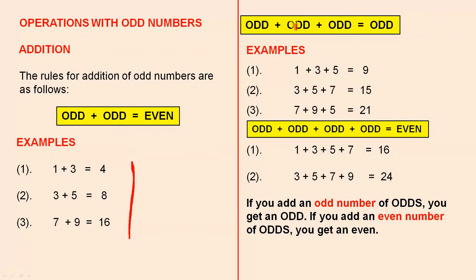If you add three odd numbers together, you get an odd number. Here are the examples. If you add four odd numbers together, you get an even number, and here are two examples.